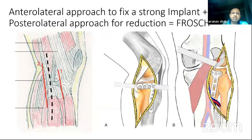It is simply 1 plus 1 equals 2. If you combine a posterolateral with an anterolateral approach, you get the Frosch approach. The incision is somewhat in between the two. We have an anterior window with the anterolateral arthrotomy, and a posterior window with the posterolateral work done posteriorly.